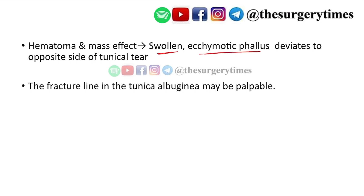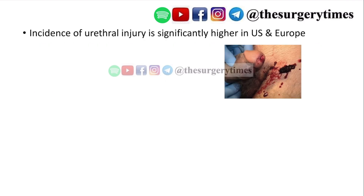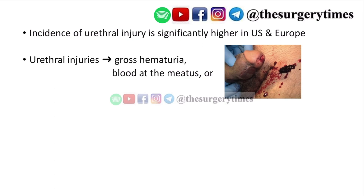Hematoma and mass effect cause a swollen and ecchymotic phallus that deviates to the opposite side of the tunical tear. After fracture, the tunica albuginea defect may be palpable, helping locate the fracture site. Due to fear and embarrassment, patients often present late, which delays diagnosis and worsens outcomes.